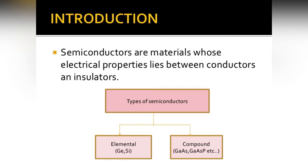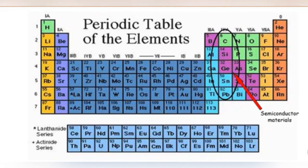Types of semiconductors: generally there are two types — elemental and compound. Elemental semiconductors consist of a single element, while compound semiconductors are a combination of two elements. What are the possible semiconductor materials?